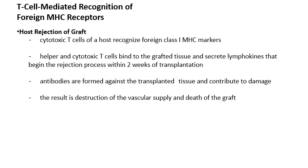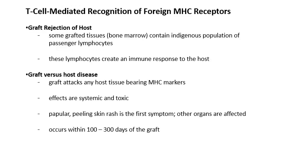The other scenario is graft-versus-host disease: the grafted tissue has its own T cells, and those T cells recognize the entire host's body as foreign. This is a more systemic problem and usually comes from bone marrow transplants. T cells are made in the bone marrow, so transplanted bone marrow produces immature T cells that mature and begin recognizing every cell in the new body as a foreign antigen — causing the grafted tissue to attack the entire person.